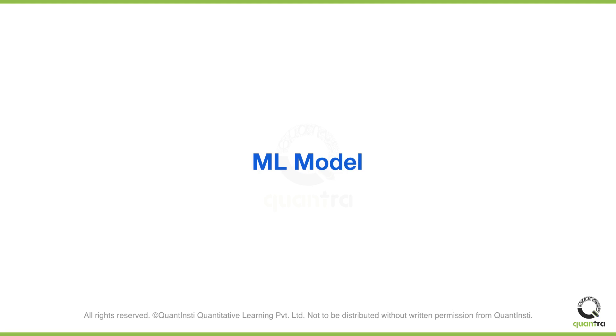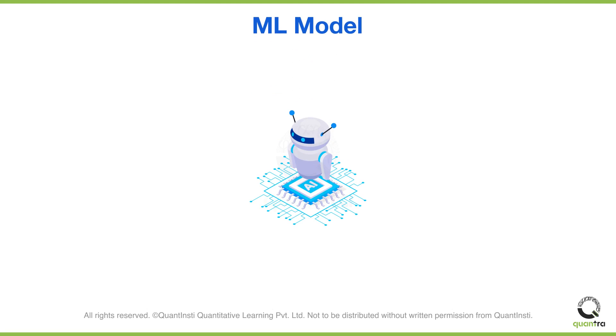Let us now forecast the IV values. But wait, there are tens of machine learning models. Which ML model should we use? We can use any ML model provided it satisfies our prediction requirements. For example, we are looking to forecast the IV values, which is a continuous variable.